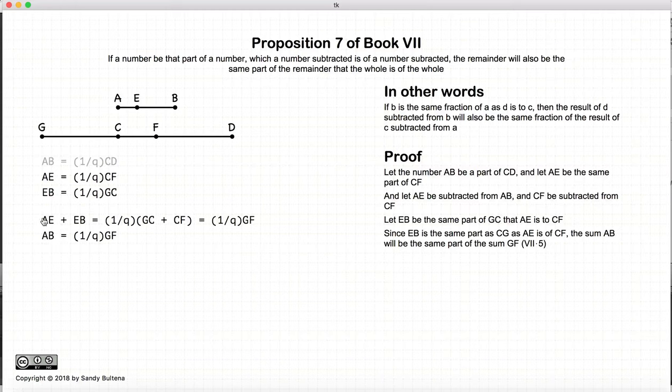So what we end up with, ae plus eb, ae plus eb is equal to ab. So we end up that ab is the same fraction of gf as ab is to cf. So ab is the same fraction to gf as ae is to cf.